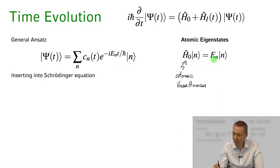So H0 times n equals En times n. Now this forms a complete basis set, these atomic eigenstates, so I can expand any wave function psi of t as a superposition state of these atomic basis functions with suitable coefficients cn of t, and I've explicitly written down the eigenenergy phase evolution of these nth eigenstates.